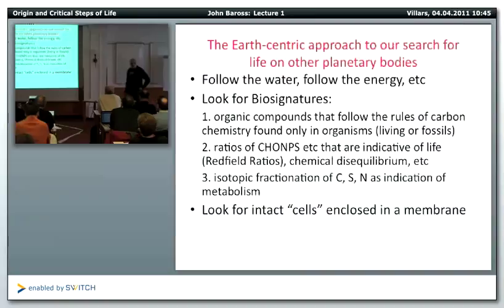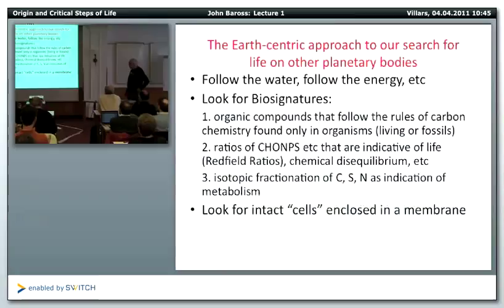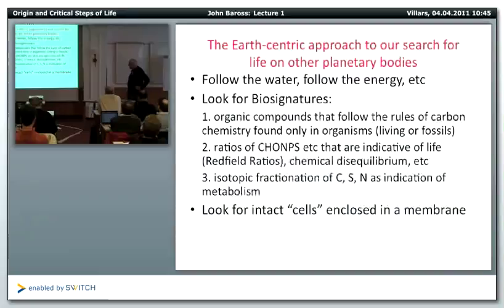Biosignatures include organic compounds that follow the rules of organic chemistry found in organisms, including chirality, the ratio of carbon, hydrogen, nitrogen, phosphorus, and sulfur — the Redfield ratios, where in life the ratio of carbon to hydrogen to oxygen follow very specific ratios. Also, microbes fractionate isotopes like C12 and C13 depending on the kind of metabolism, leaving a fractionation signal. Or you can look for intact cells.